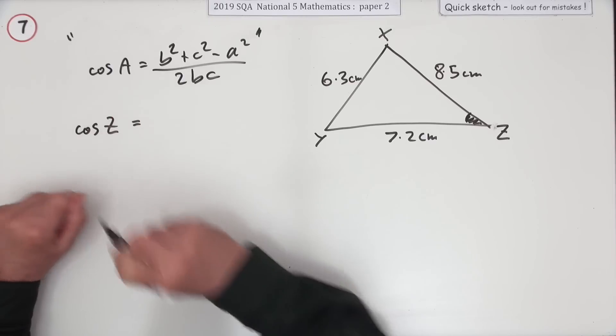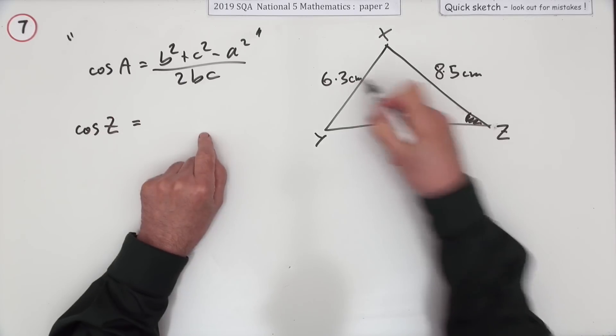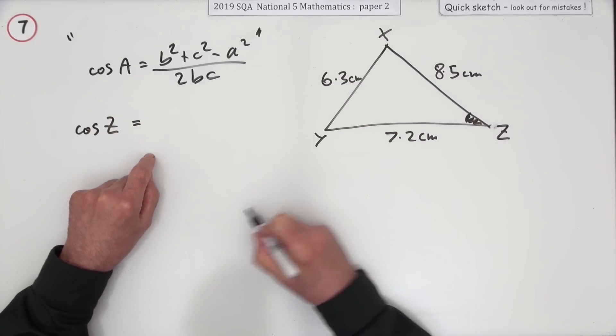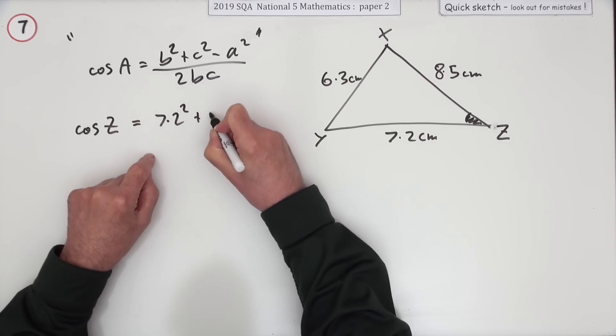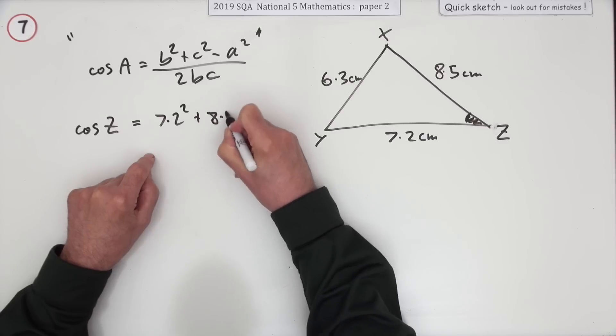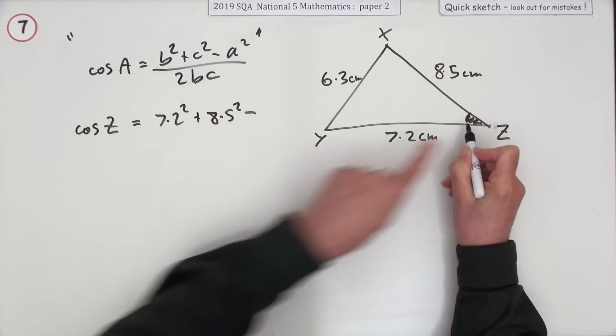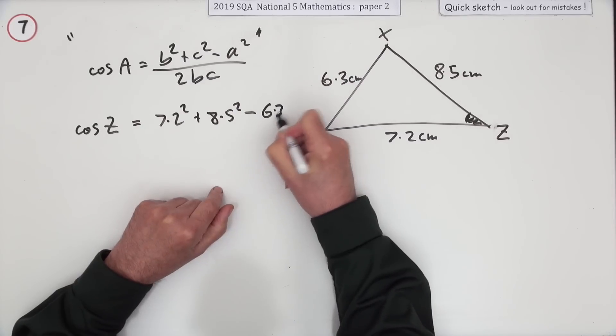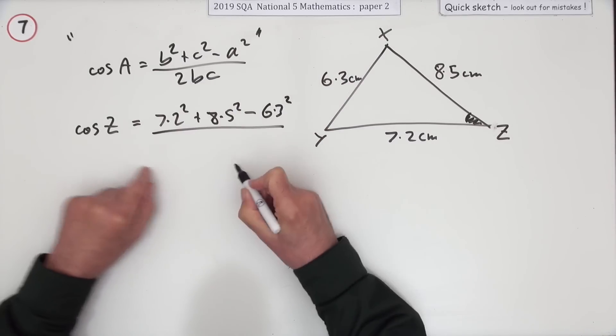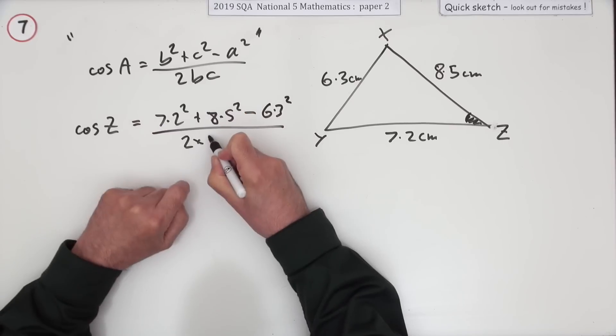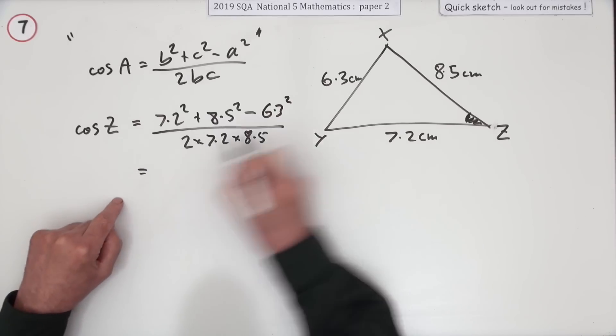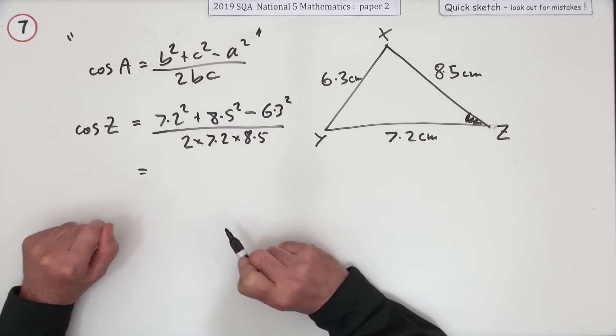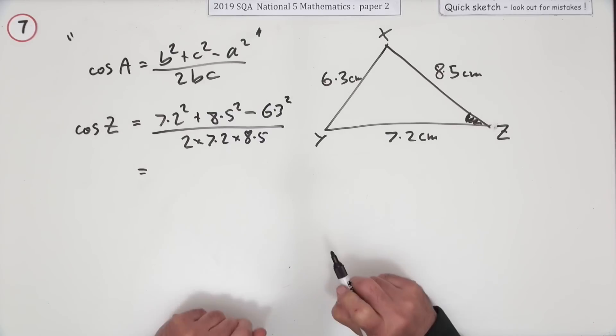Since it's angle z, I'm going to write cos z for my formula. I know the other two will be those ones. So it must be 7.2 squared plus 8.5 squared, but minus the one opposite the angle, 6.3 squared, over 2 times 7.2 times 8.5. The odd one out of the numbers in the calculations are the ones opposite the angle.